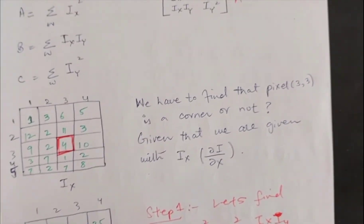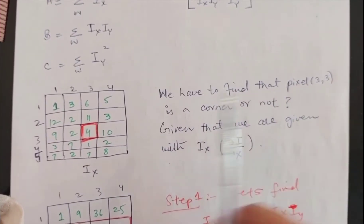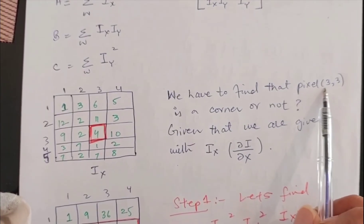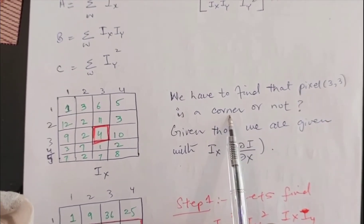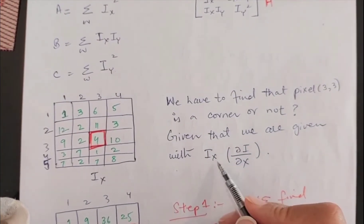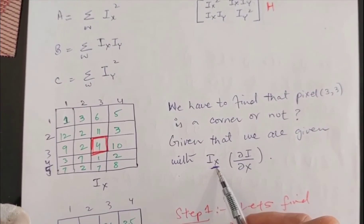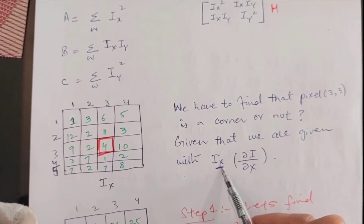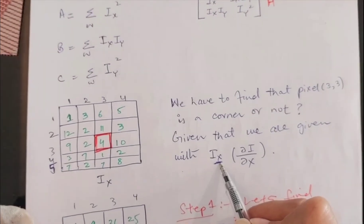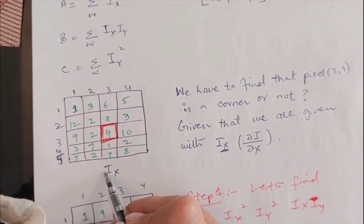Now let's see what the question given to us in the exam is. Assume we have this image where we have to find whether pixel 3,3 is a corner or not. We are provided with this gradient. If your examiner is kind enough, he can give you this gradient directly; otherwise, he might give you an image and you have to calculate the gradient yourself. We assume that the gradient is given in the question.